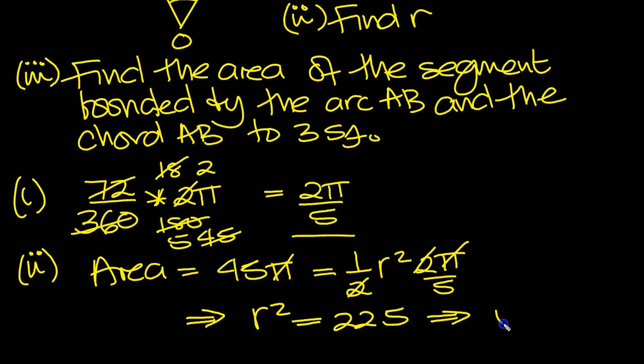225. And so square root of both sides, R is equal to 15 centimeters. R is positive, so we just take the positive solution. So there's R then, for part 2.